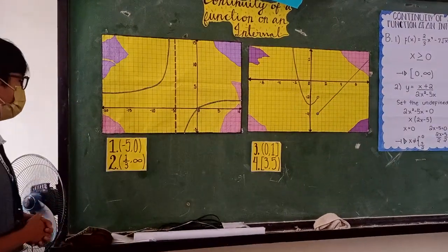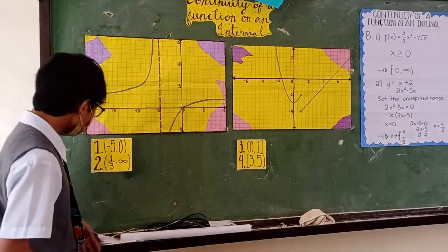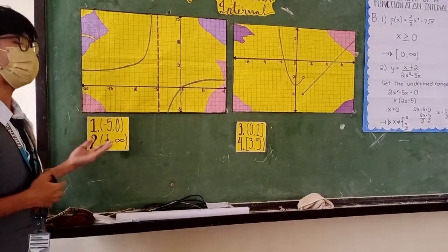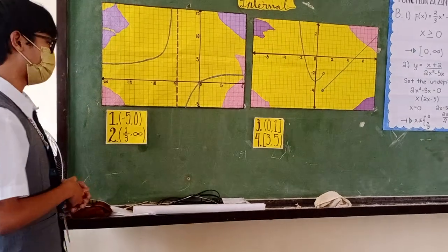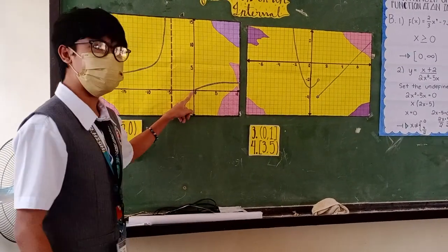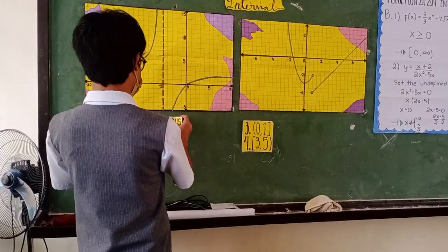For item number one, the given interval is negative five and zero. The notation symbol written is parentheses, so negative five and zero should not be included while tracing the line. From this point to here, while tracing the line, the line did not break. Therefore, this graph is continuous.